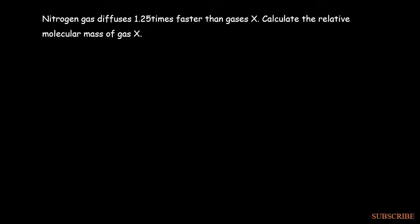In this video we are going to look at an example where we can apply Graham's law. The question says nitrogen gas diffuses 1.25 times faster than gas X. Calculate the relative molecular mass of gas X. Usually with such questions, once you obtain the molecular mass, you can have an idea on the nature of the gas.